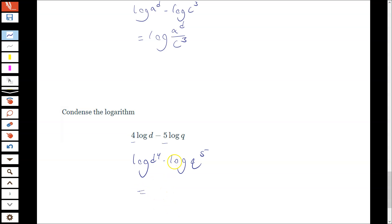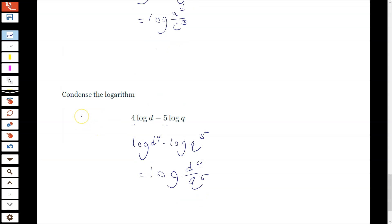And then I'm subtracting again, so inside the logarithm I am dividing D to the fourth over Q to the fifth. And that's all there is to it.